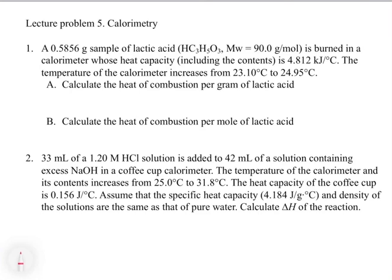The first example says: a 0.5856 gram sample of lactic acid is burned in a calorimeter whose heat capacity, including the contents, is 4.812 kilojoules per degree Celsius. The temperature of the calorimeter increases from 23.10 to 24.95 degrees Celsius. Calculate the heat of combustion per gram of lactic acid and the heat of combustion per mole of lactic acid.